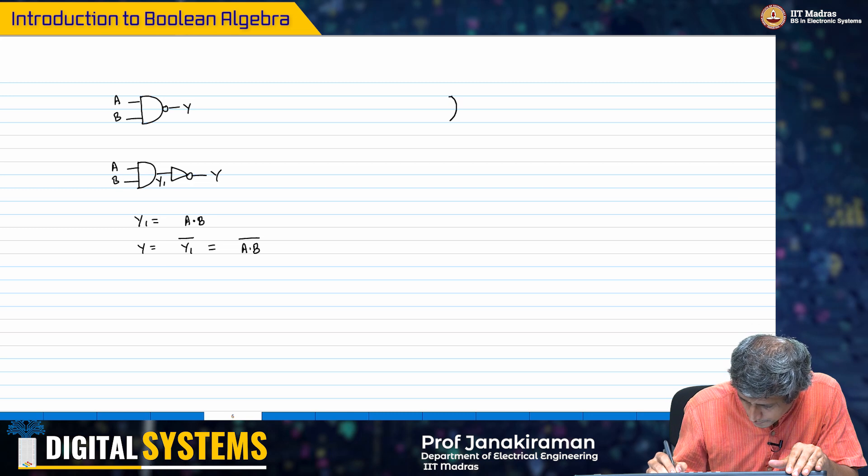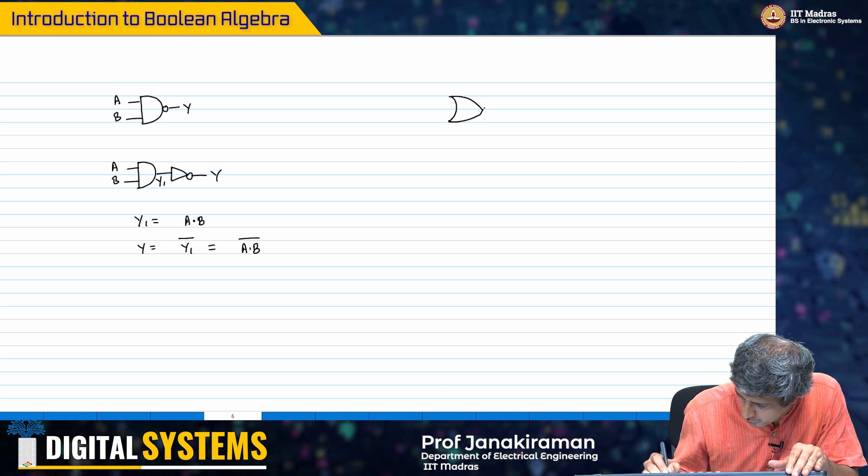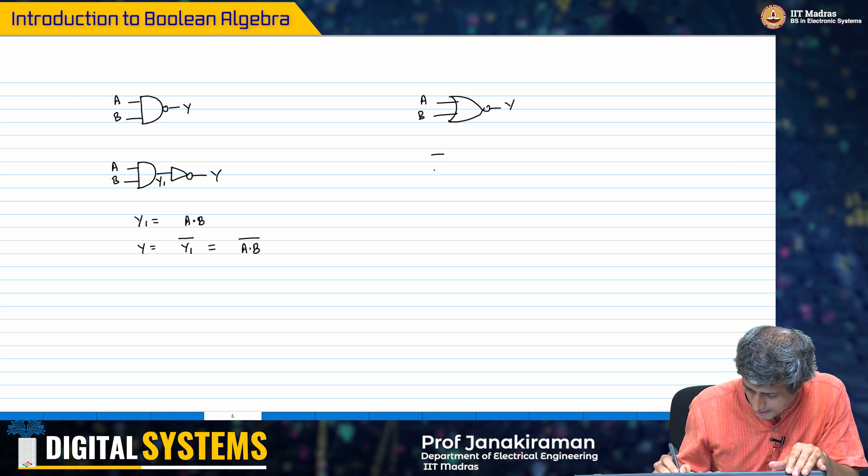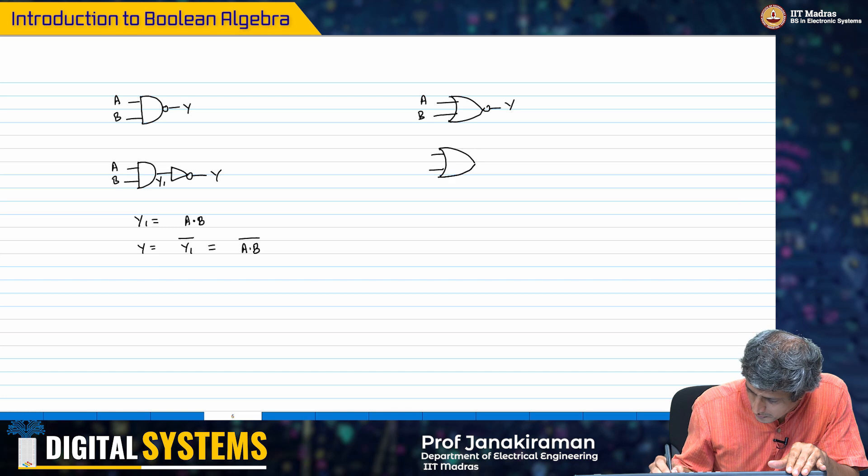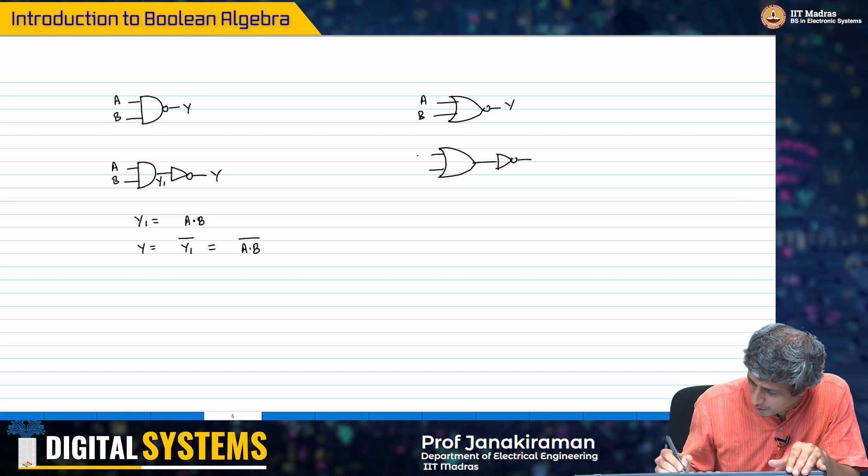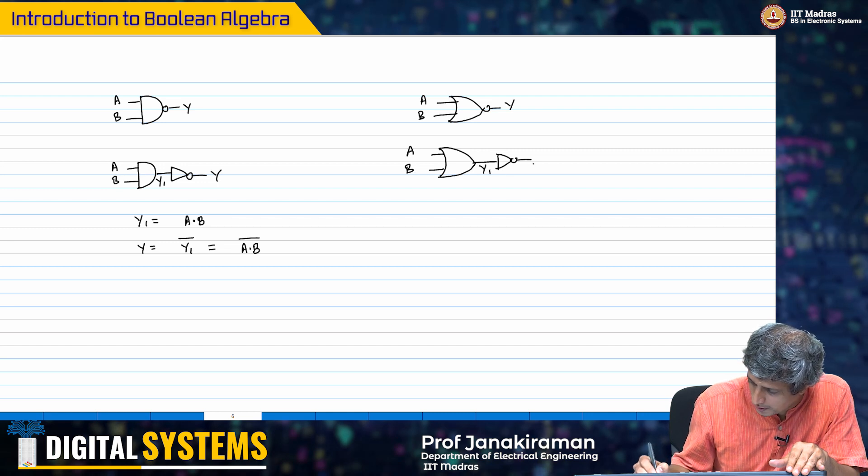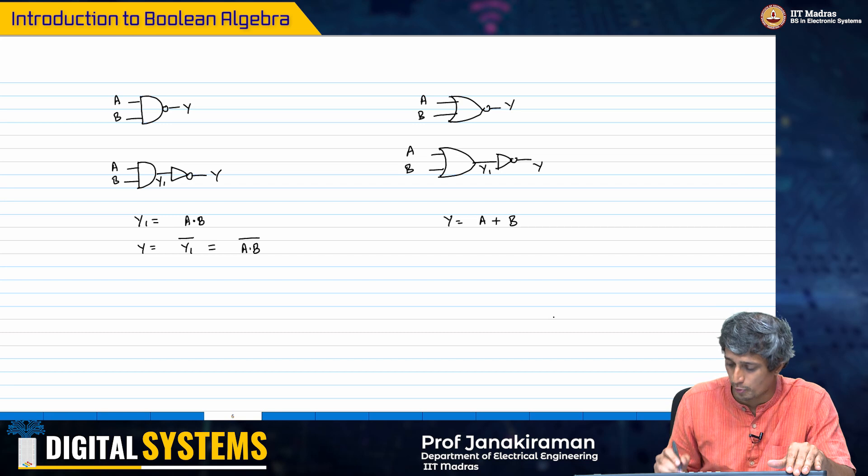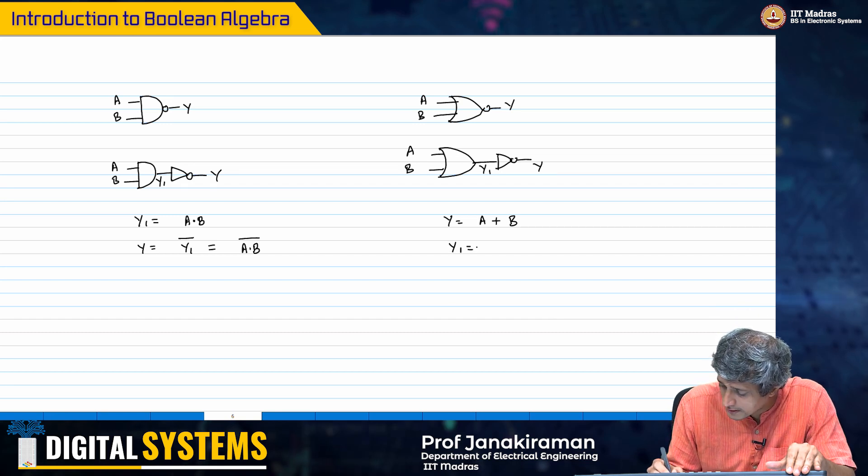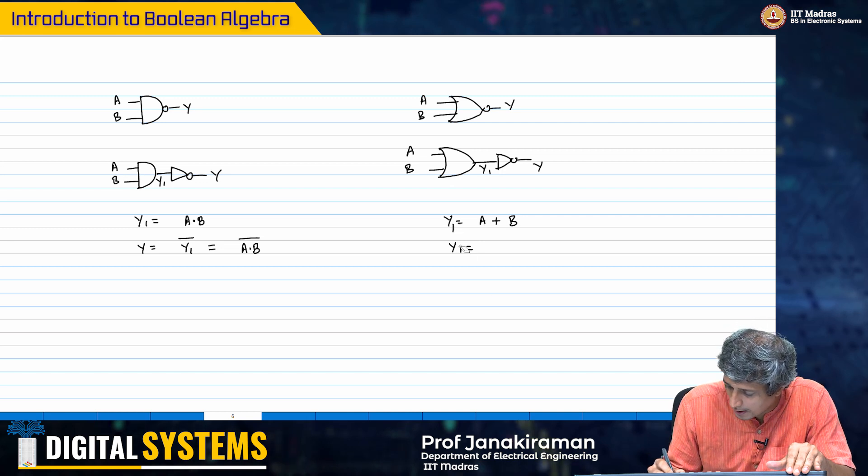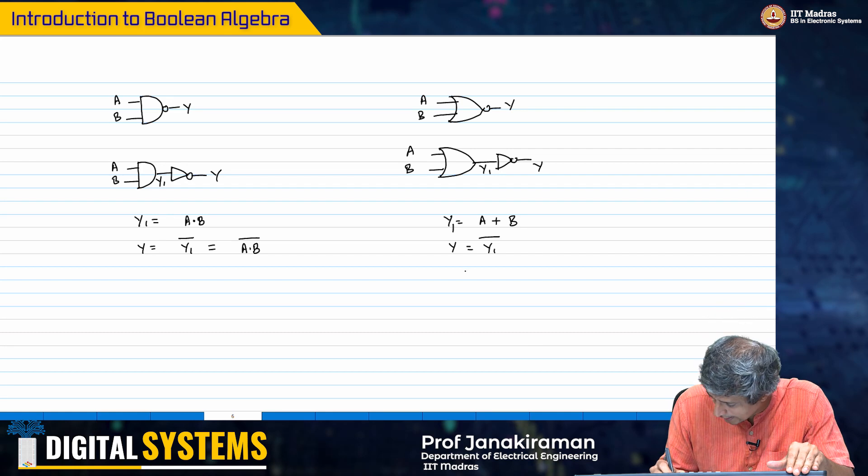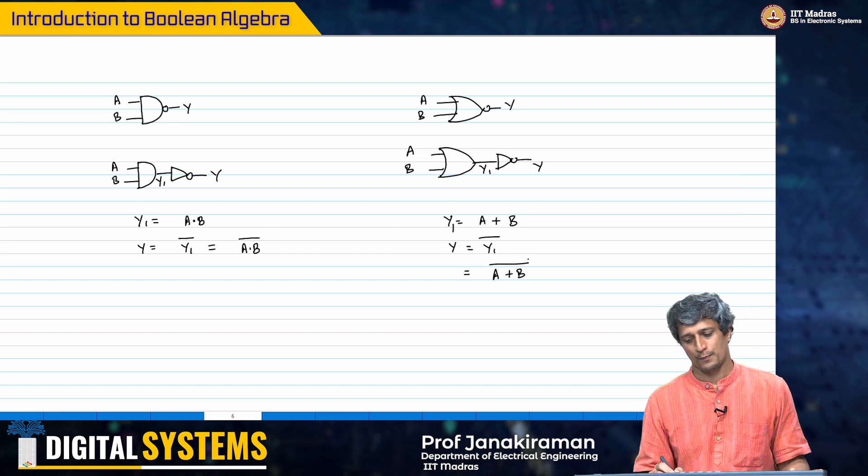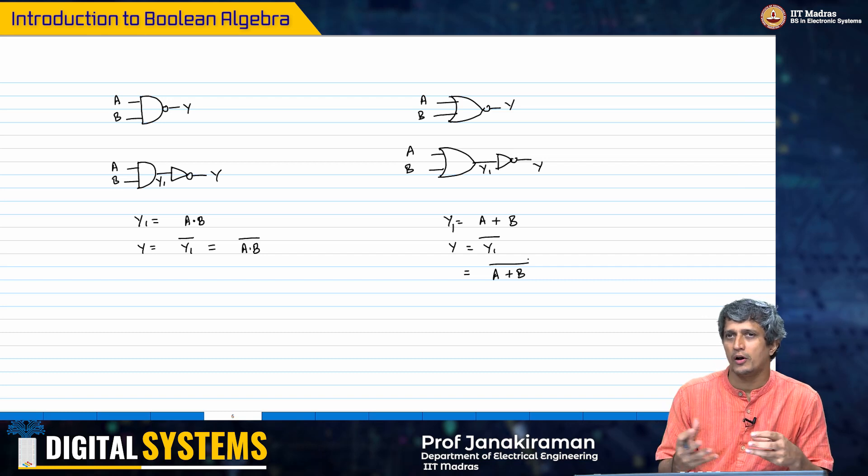Likewise, if I take the NOR gate - input a, b, y - this is nothing but an OR gate which is followed by an inverter. You get a, b, y1, and y. y1 equal to a plus b where the plus represents the OR operator, and y is going to be y1 whole bar. I can again represent this as a OR b whole bar. This gives you a gist of the Boolean representation.